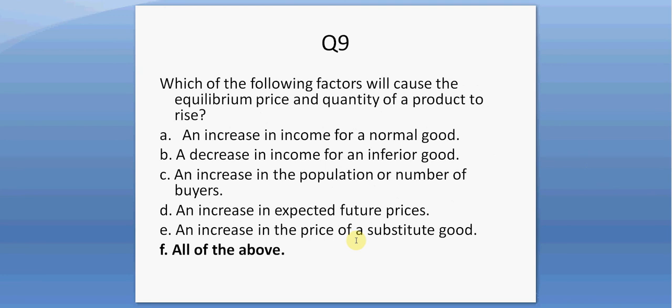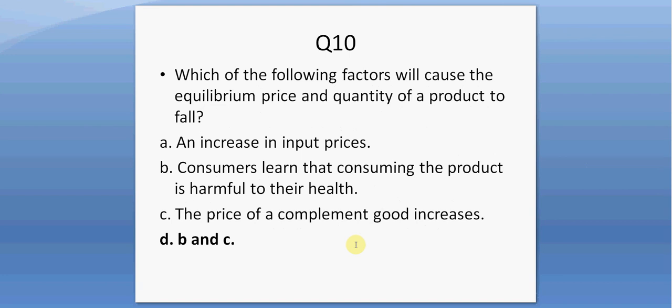Question nine. Which of the following factors will cause the equilibrium price and quantity of a product to rise? All of the above — all of these factors will cause the demand for a product to shift right, leading to a higher equilibrium price and quantity. Question ten: an increase in input prices affects the supply side of the market. B and C are the correct answers here.